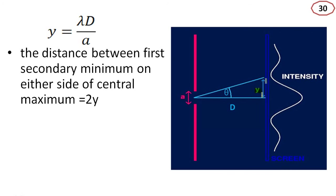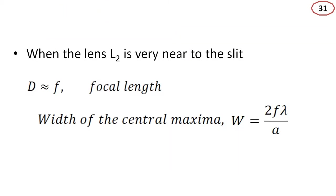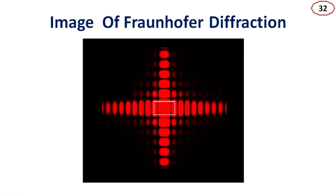This y is the distance for one side only. To get the full width, we multiply y by 2. The distance between the first secondary minimum on either side of the central maximum is 2y, so the width of the central maximum is 2y equals 2 lambda d by a. When lens L2 is very near to the slit, d is approximately equal to f, the focal length, and the width of central maximum W equals 2f lambda by a.